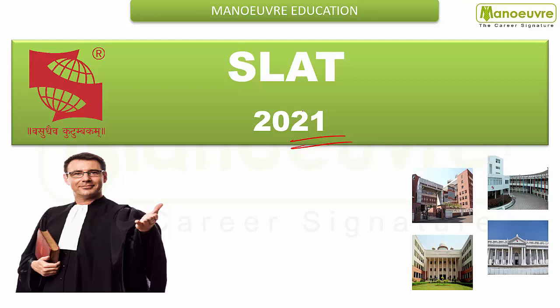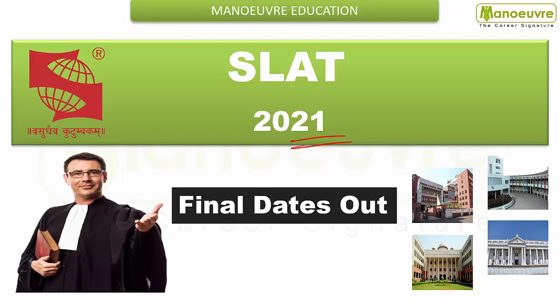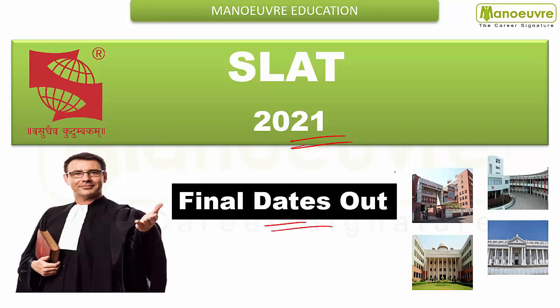Now guys, we'll talk about the final dates — no more talk about tentative dates. Final dates are out. So plan all your strategies, prepare your roadmap and strengthen your preparations, and get into your dream college that is Symbiosis, with campuses as per your preferences: Pune, Delhi, Hyderabad, and Nagpur.